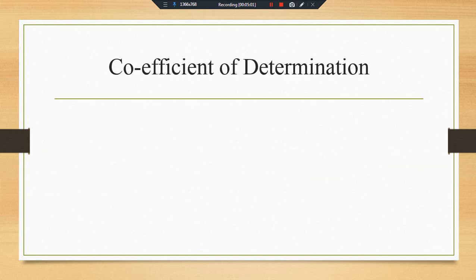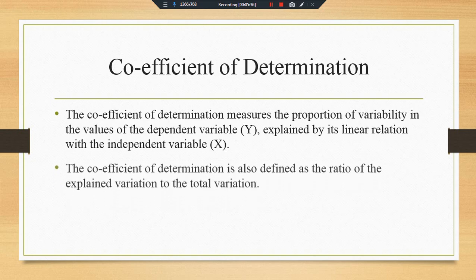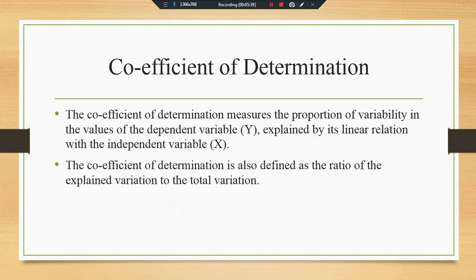The coefficient of determination measures the portion of the variability in the value of the dependent variable Y that is explained by its linear relation with the independent variable. This shows that the total variation which is explained by the independent variable is technically called the coefficient of determination, or R-square. It is also defined as the ratio of the explained variation to the total variation.